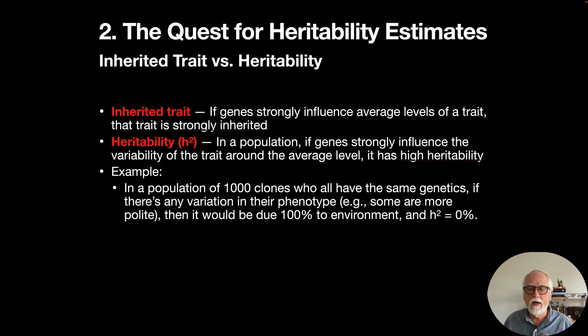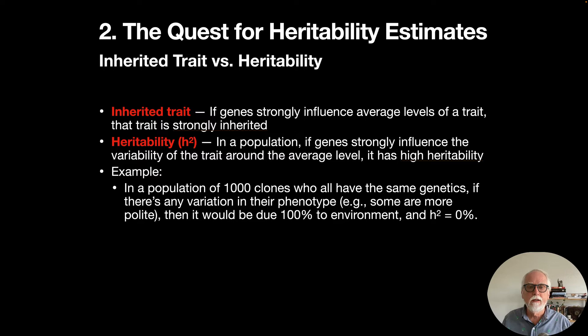To illustrate: if you have a population of 1,000 clones with exactly the same genetics and some are exceptionally polite, we can't attribute that variation to genetics since all 1,000 have identical genes. The heritability estimate — h-squared — would be zero percent, because the variability in politeness is entirely explained by the environment.